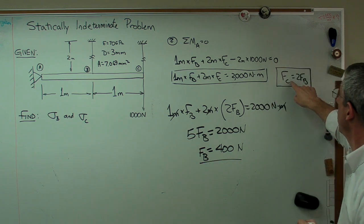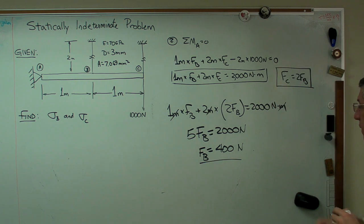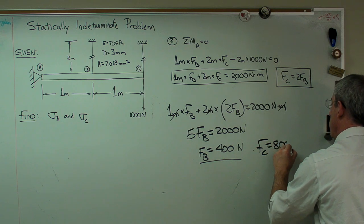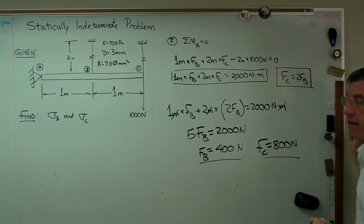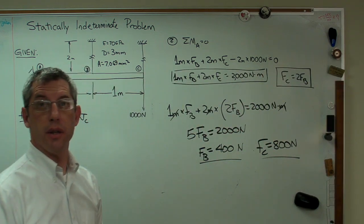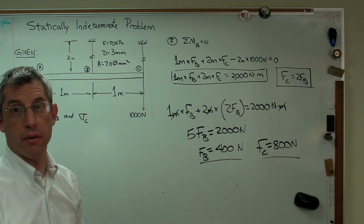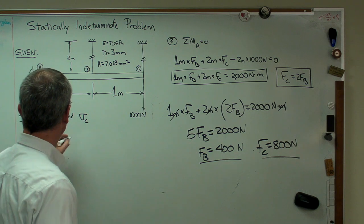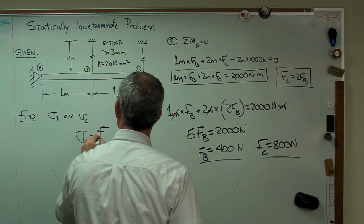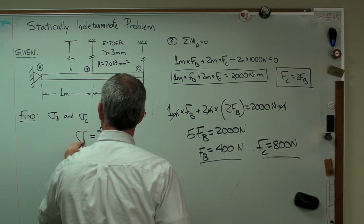There's the first part. The second part, since I know Fc is twice Fb, I now know that Fc is 800 newtons. The last step now, now that I have the forces, is to simply find the stresses, divide the forces by the areas. The stress at B is the force in B divided by that area.